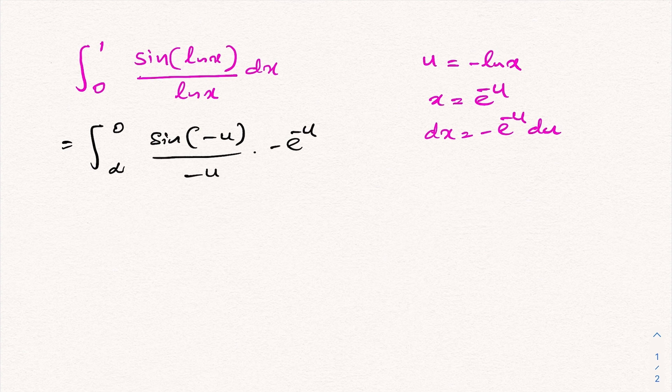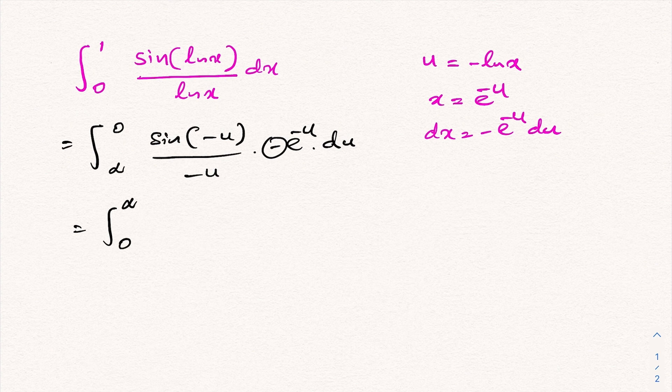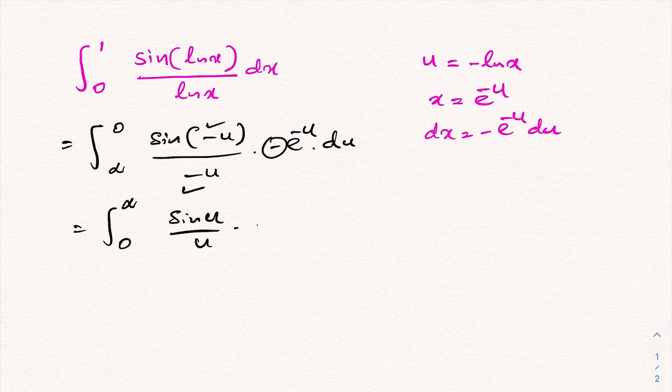We can interchange the limits from 0 to infinity. When we change the limit, the minus sign gets cancelled. Sine of minus u becomes minus sine of u, and these minus signs cancel out. So we have sine of u over u times e to the minus u du.